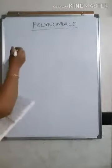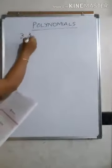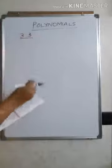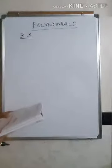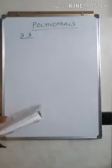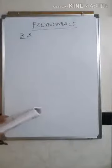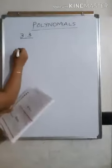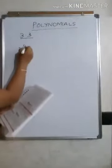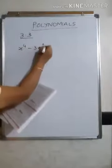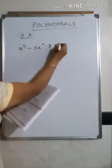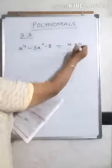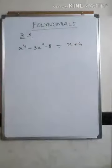In practice set 3.3, you have to divide each of the following polynomials by synthetic division and also by linear division. We'll first see how to do division by synthetic method, then learn linear division. For the fifth problem, you have x to the power of 4 minus 3x squared minus x, and this has to be divided by x plus 4.